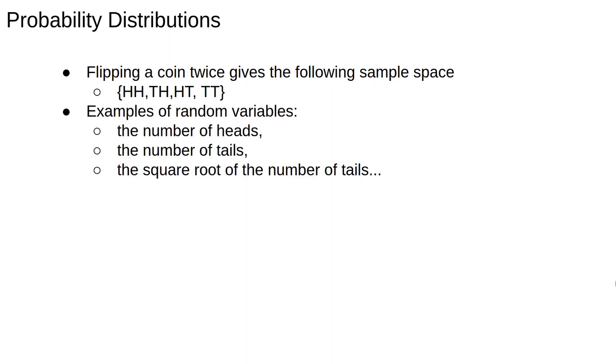Examples of random variables associated with this experiment are: number of heads, number of tails, square root of the number of tails, cosine of twice the number of heads, and so on.